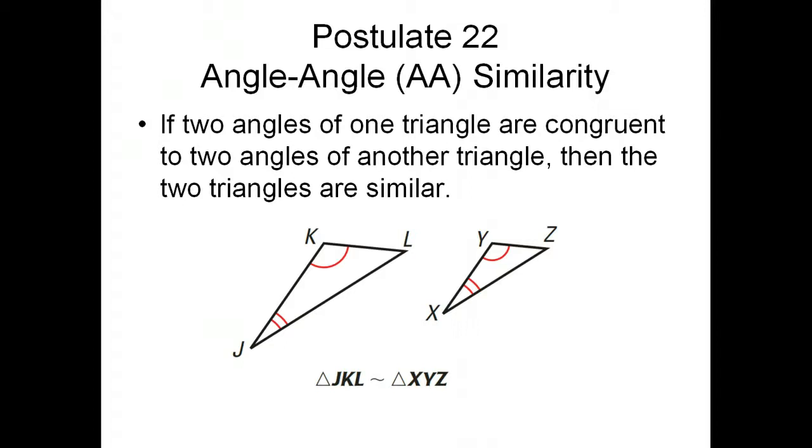It states that if two angles of one triangle are congruent to two angles of the other triangle, then the two triangles will always be similar. This makes sense because if two angles are congruent, then the third angles would have to be by the third angle theorem, and so that gives us all of the angles congruent. We don't know anything about the sides, but if all of the angles are congruent, then we have similarity.